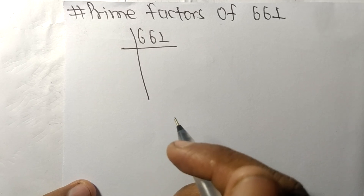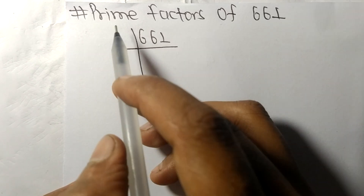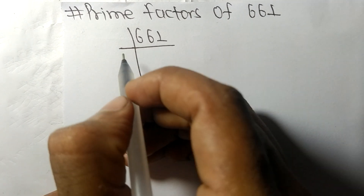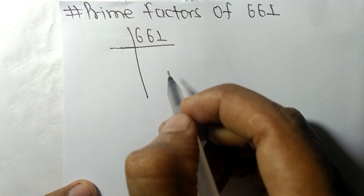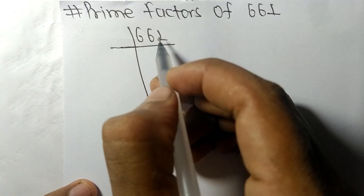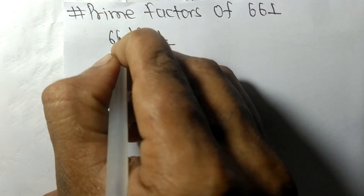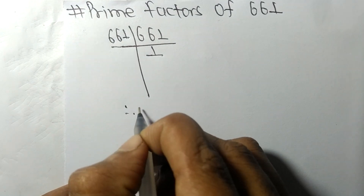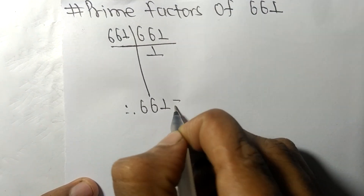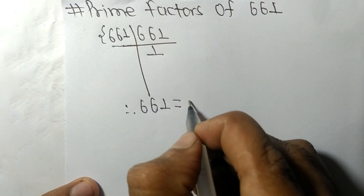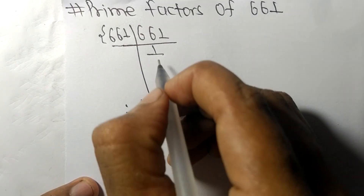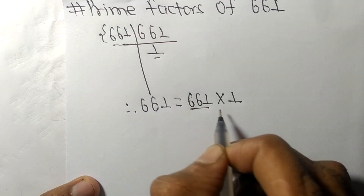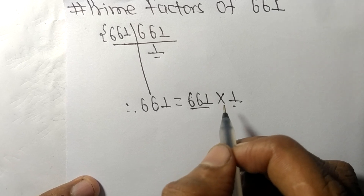Today we shall learn to find the prime factors of 661. 661 is a prime number, so it is divisible by 661 only. On dividing, we get 1. Therefore, 661 equals 661 times 1, and so 661 and 1 are the prime factors of 661.